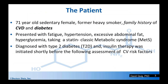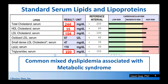Our patient is a 71-year-old female. She's a former heavy smoker with a family history of cardiovascular disease and diabetes, so she starts out behind the eight ball. She presented with fatigue, hypertension, excessive abdominal fat, and hyperglycemia, and was taking a statin — a classic case of metabolic syndrome and, as we will see, cardiometabolic syndrome. She was diagnosed with type 2 diabetes and insulin therapy was started shortly before the following assessment of her cardiovascular risk factors.